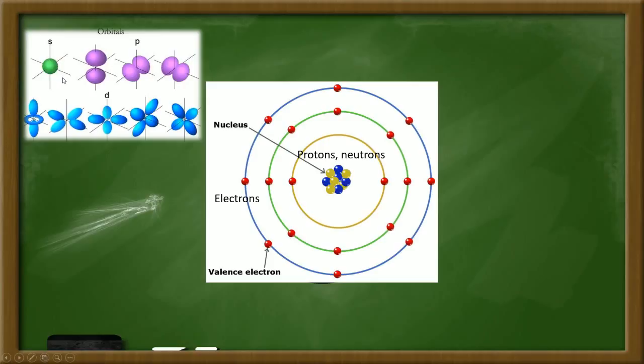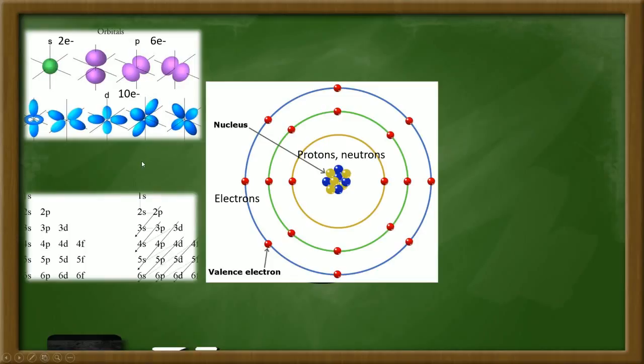Therefore, the S orbitals, two electrons maximum, P orbitals, six electrons maximum, D orbitals, ten electrons maximum. And electrons actually start by filling the lower energy levels first, and in this diagonal pattern here, filling up each of these orbitals that lie inside the electron shells, and this gives rise to different electron configurations.